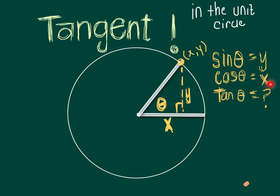The cosine of the angle is given by the x value of the spot where the angle hits the unit circle. So how is tangent related to the unit circle? And I promise it is.